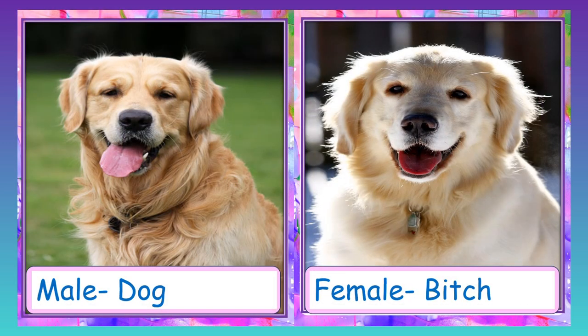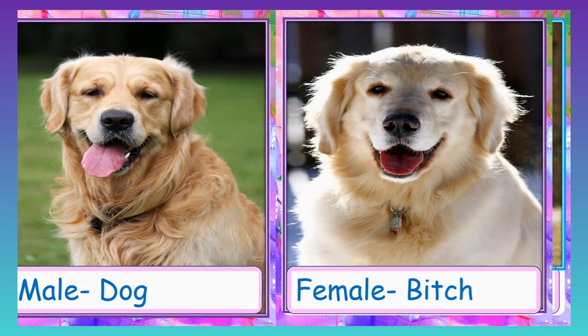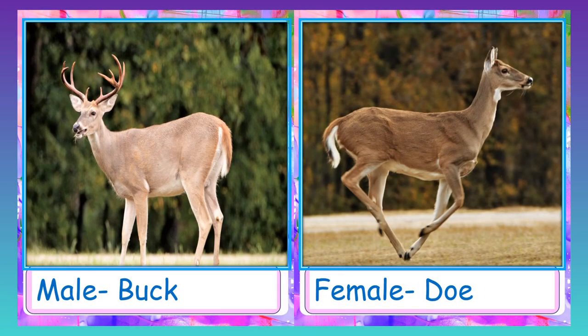Dog: male is called dog and female is called bitch. Deer: male deer is called buck and female is called doe.